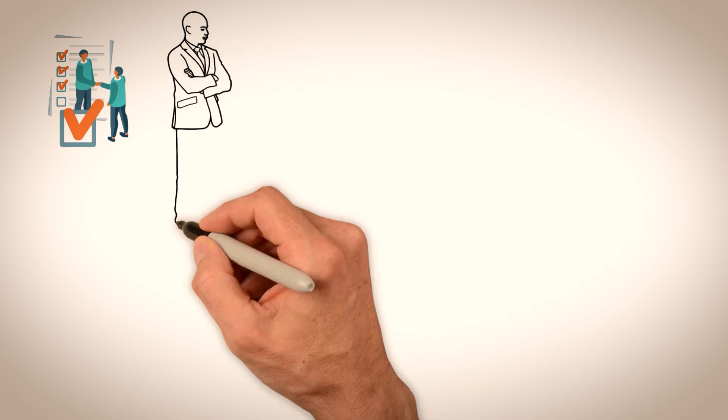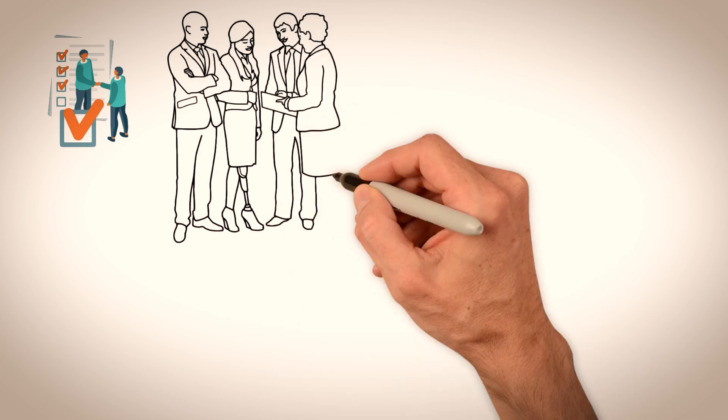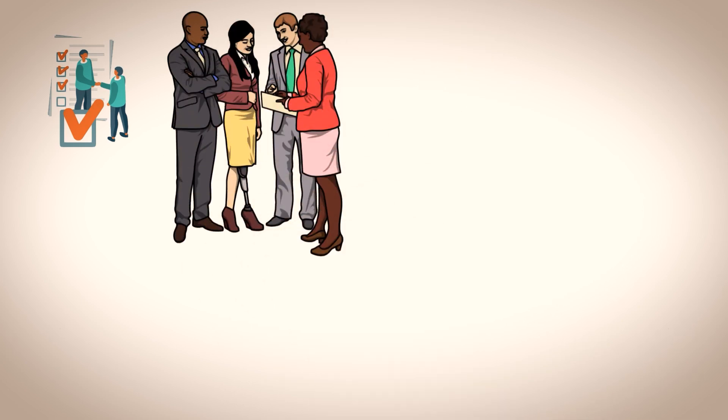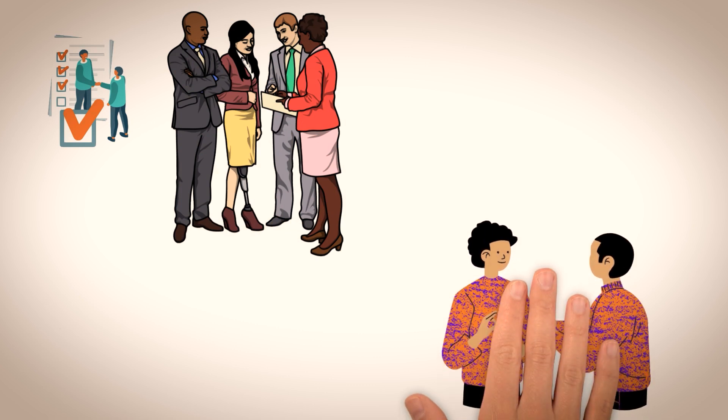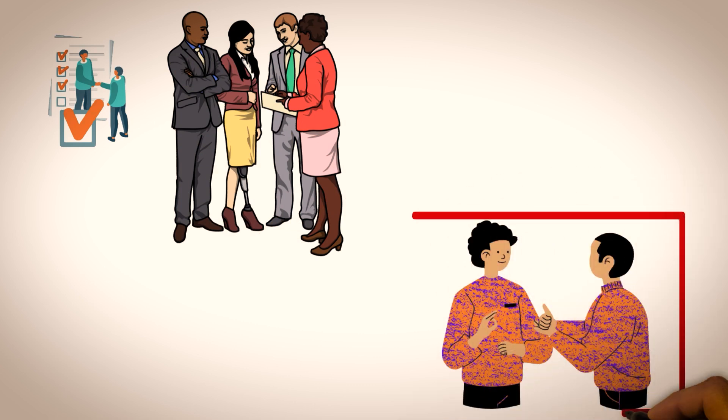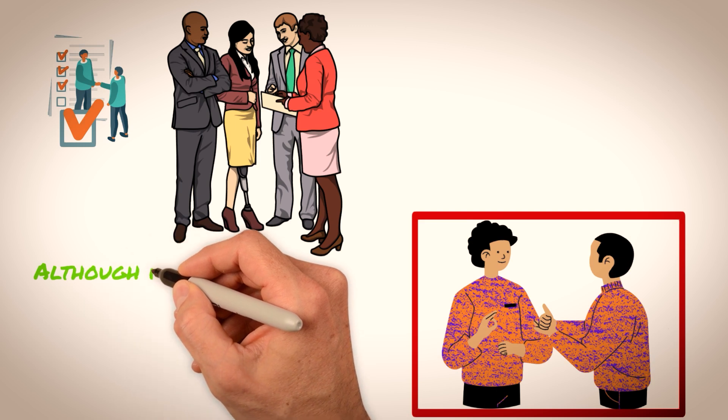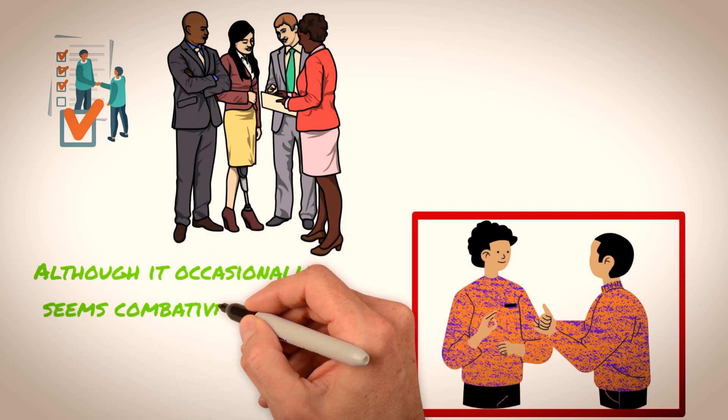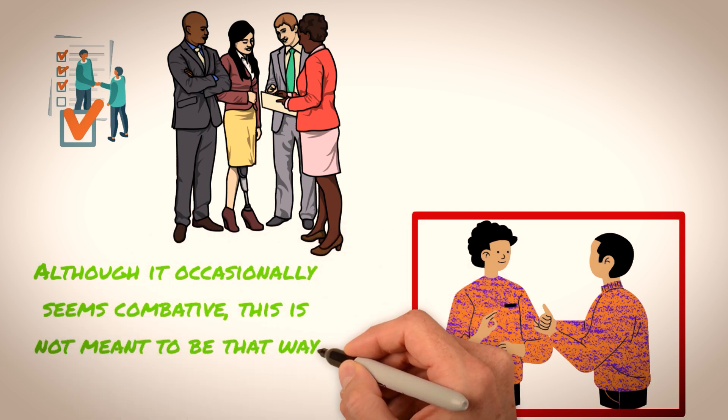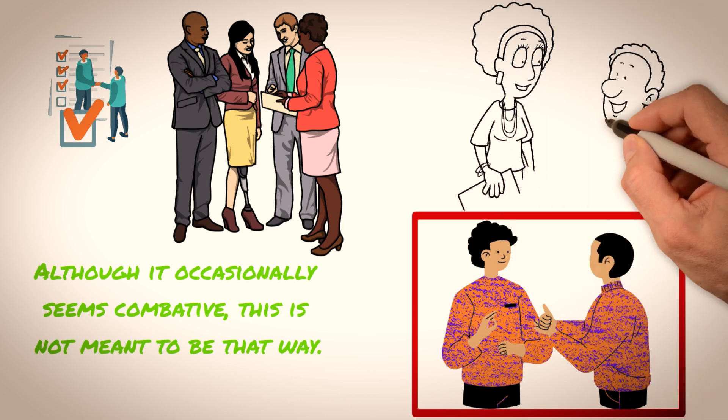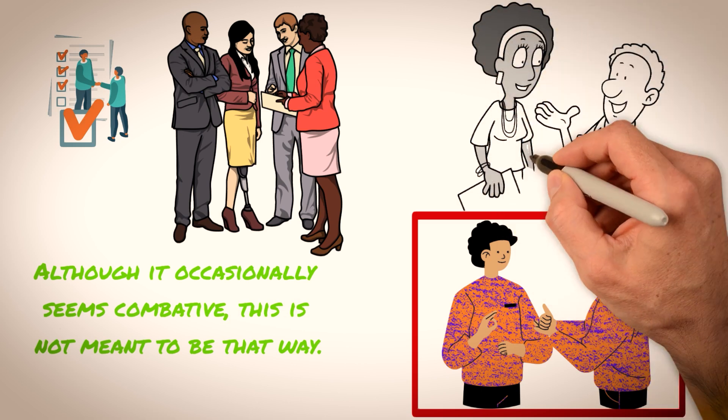This level of confidence is often evident in the way that Sigma males interact with others. They are not afraid to speak their minds and will often challenge traditional ideas and ways of thinking. This can sometimes come across as confrontational, but it is not intended to be so. Instead, it is a reflection of the Sigma male's desire to express their views and opinions.